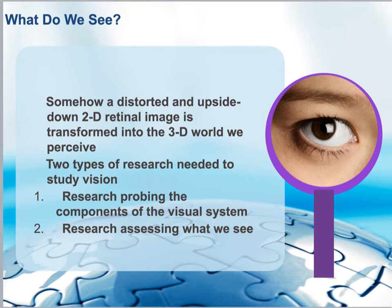So again, number one is researching the components of the visual system and anatomy, and number two is what you and I are able to see — and that second one starts getting tricky as we move into the brain.